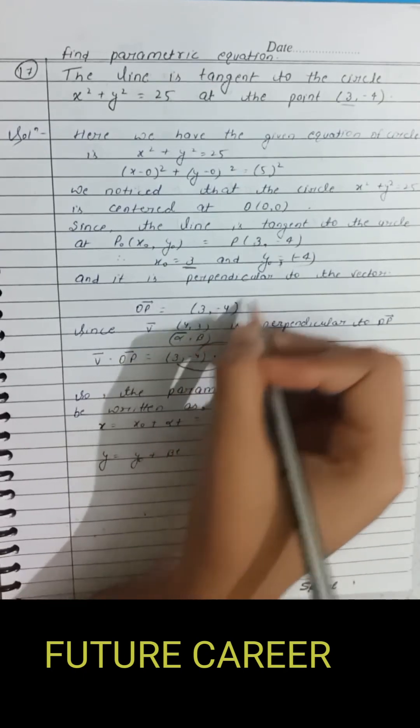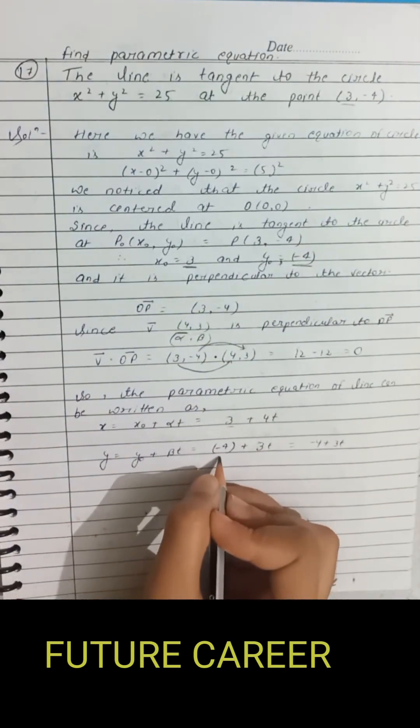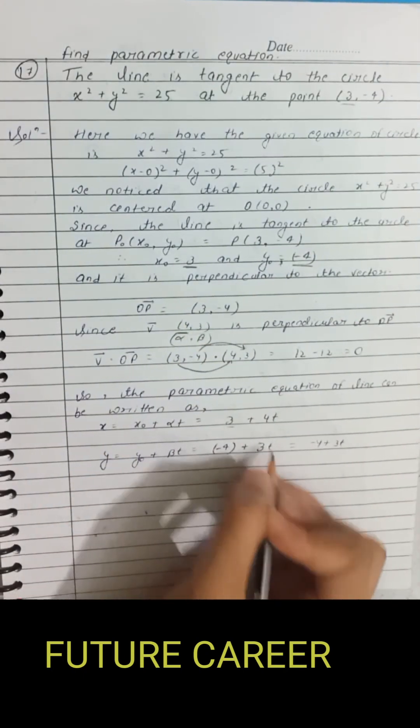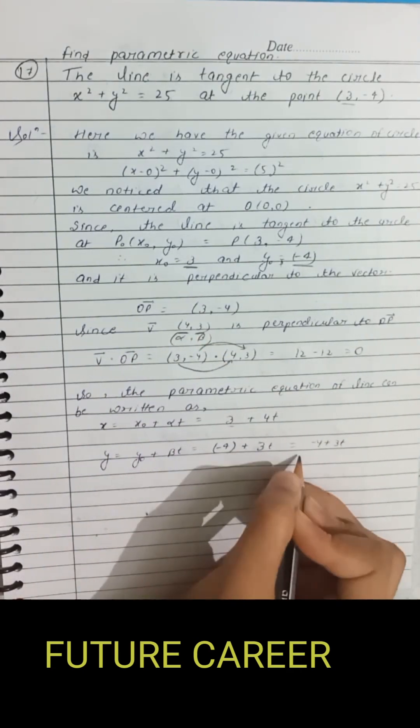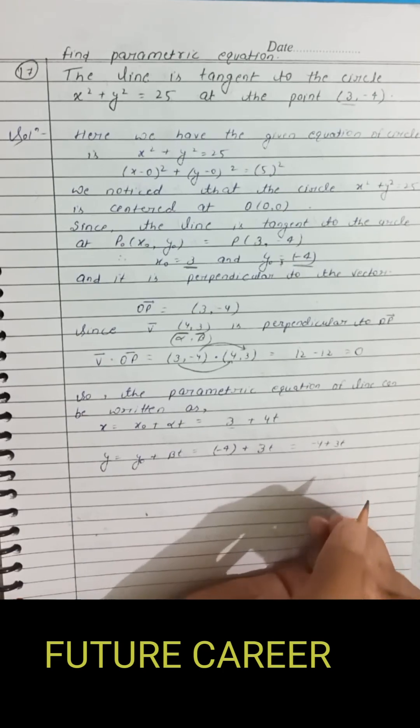So y naught equals -4, and beta equals 3, so y equals -4 plus 3t.